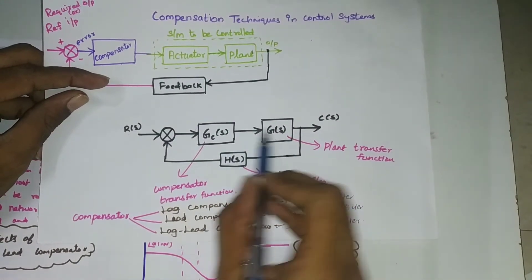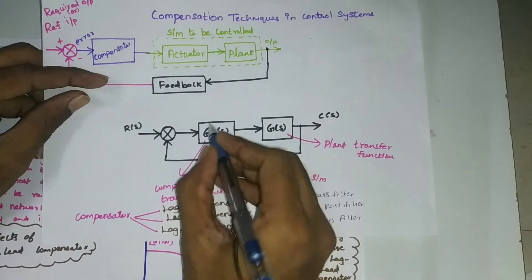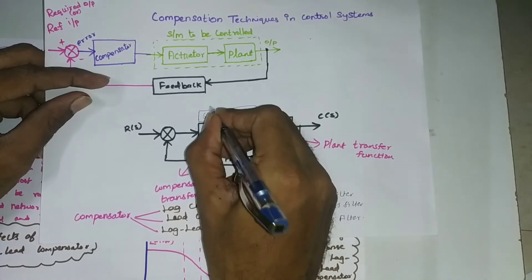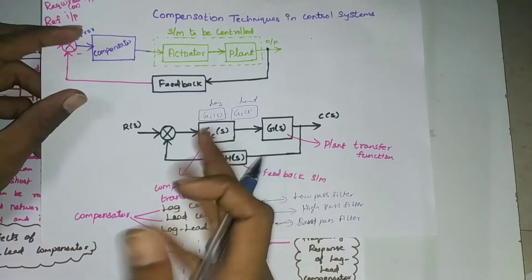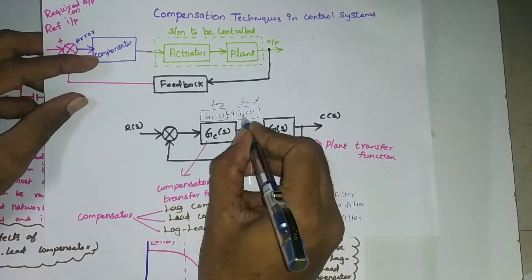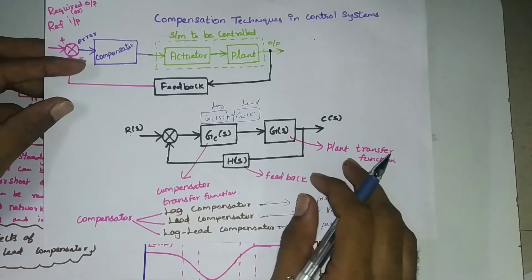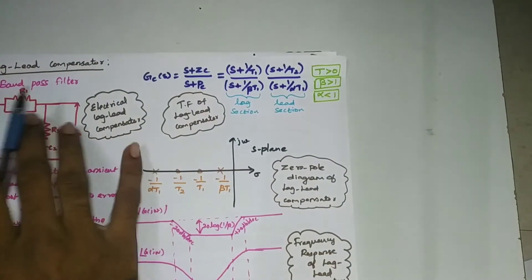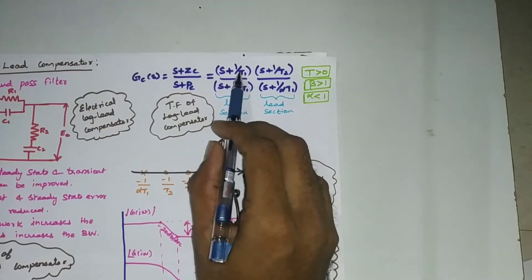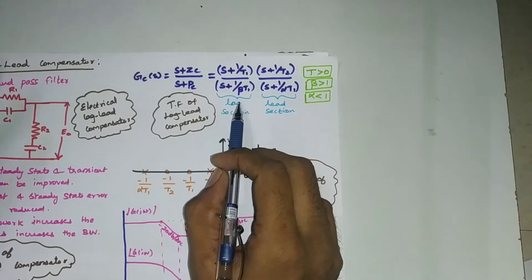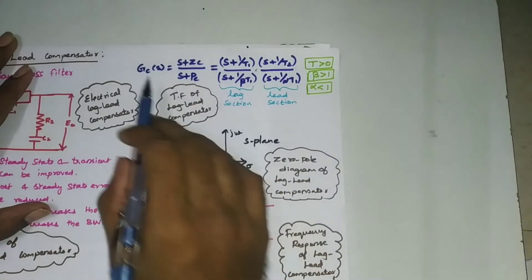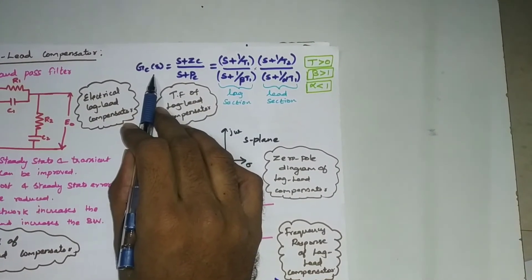Here is the plant to be controlled in series with a compensator Gc(s). We are going to add two Gc(s) — lag and lead — in cascade. Using block diagram reduction, series blocks can be multiplied together. So the transfer function of the lag-lead compensator equals (s + 1/T1)/(s + 1/βT1) multiplied by the lead section.